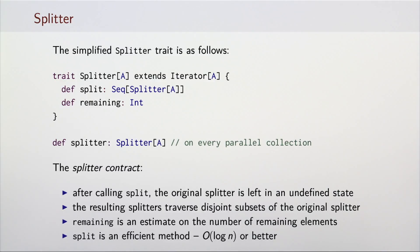The splitter contract states several things. First, after calling split, the splitter is left in an undefined state. Methods like next, hasNext, or split cannot be called again on the splitter.